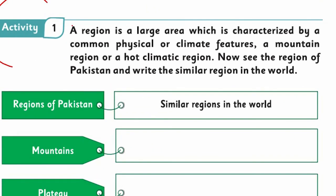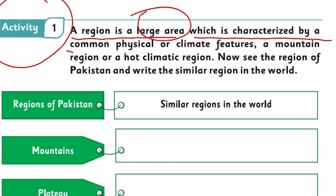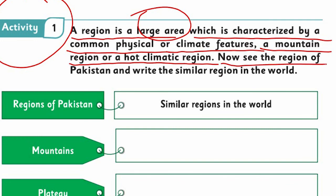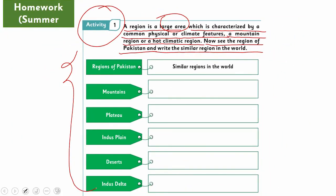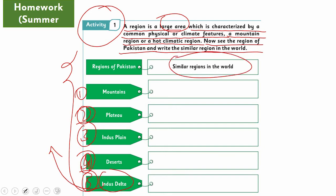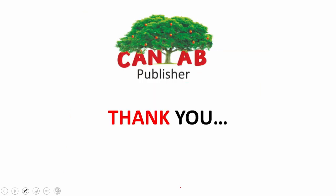From the Summer Pack, Activity Number One: there is a region with climatic features — a mountain region or a hard climatic region. Look at the regions of Pakistan and write the similar region in the world. I have told you all the regions: mountains, plateaus, Indus Plain, desert, and Indus Delta. The Indus Delta comes under coastal areas. Write which similar regions exist in the world. Thank you so much for today's lecture. See you in the next class. Allah Hafiz.